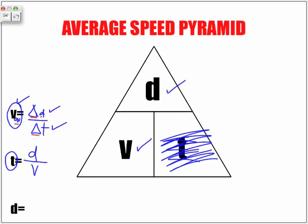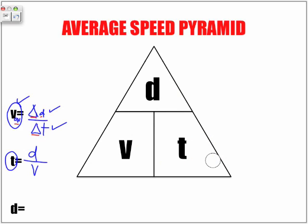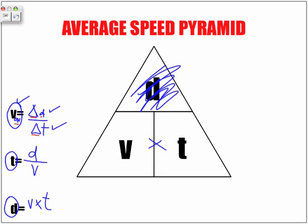In the last example here, if we're trying to find D, we're going to cover up D. Notice here we have V side by side with T, which means that to find distance, we're going to take our speed value, our V value, and multiply it by our T value.